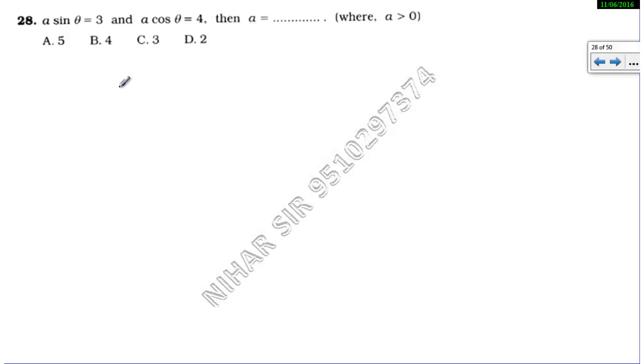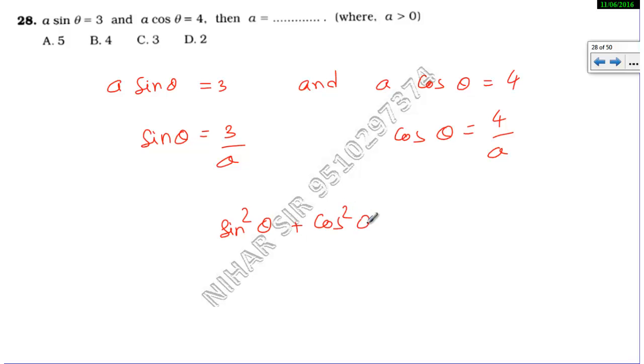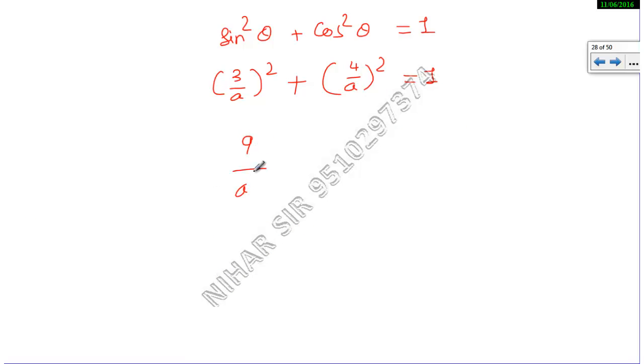In this problem, a·sinθ = 3 and a·cosθ = 4. So sinθ equals 3/a and cosθ equals 4/a. Now we have the trigonometry identity: sin²θ + cos²θ = 1. Substituting the values: (3/a)² + (4/a)² = 1. This becomes 9/a² + 16/a² = 1. Simplifying, taking LCM: (9 + 16)/a² = 1, so 25/a² = 1.